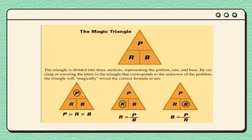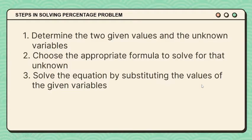If we're going to find the percentage, the formula is rate times base. If we're going to find the rate, the formula is percentage over base. And if we're going to find the base, the formula is percentage over rate. The steps in solving a percentage problem are: first, determine the two given values and the unknown; second, choose the appropriate formula; and lastly, solve by substituting the given values.